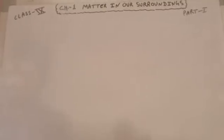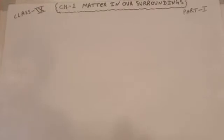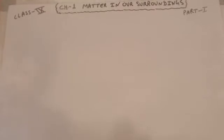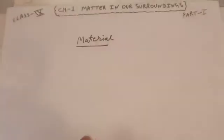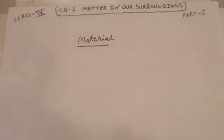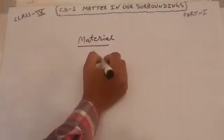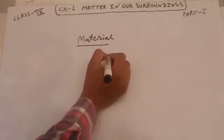As we look at our surroundings we can see large variety of things with different shapes, sizes and textures. Everything in this universe is made up of material and in these days this material is given a new name, matter, by modern scientists.